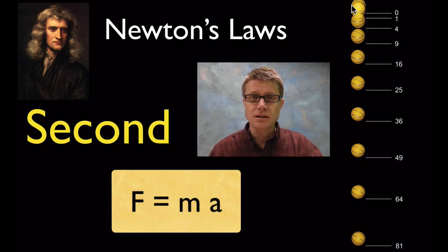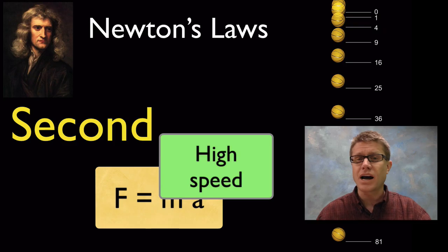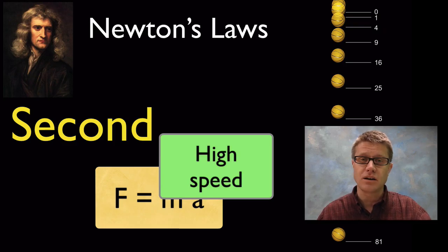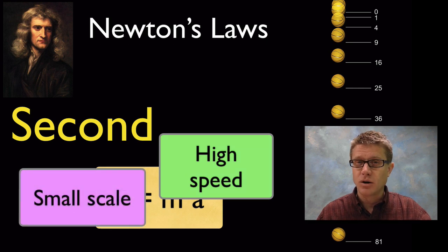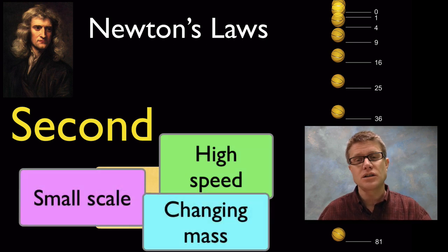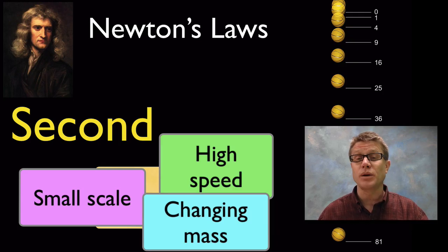Newton was right — it got us to the moon. But it doesn't always work. At high speeds as we approach the speed of light, force equals mass times acceleration kind of falls apart. The same thing at the small scale, or if we have a changing mass, it's not going to work. Physicists get a bit irritated when you say force equals mass times acceleration because it doesn't explain everything — it does a pretty good job, but we had to add to that.